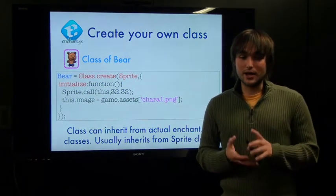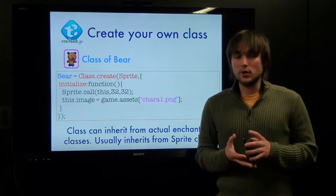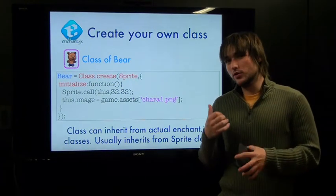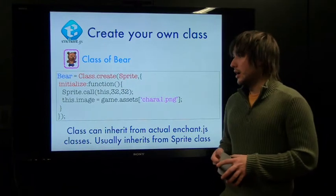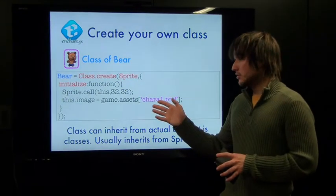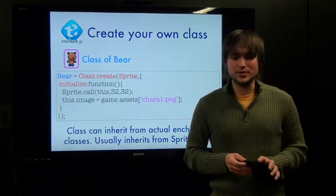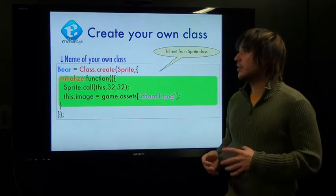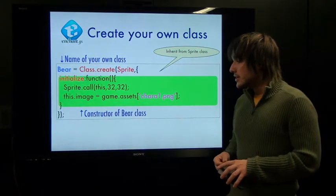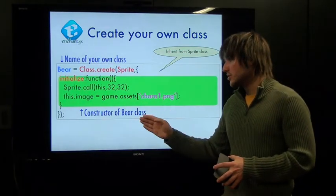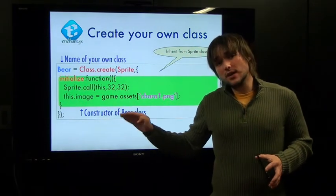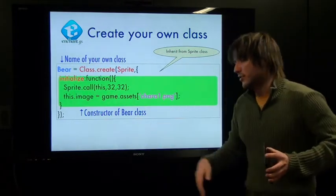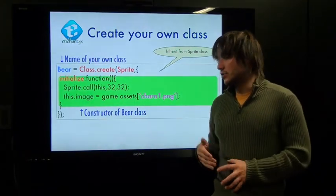Classes can inherit from actual Enchant.js classes. You can also inherit from other classes you've created inside of the game. But normally when you're creating classes, you're going to be creating them as extensions of the sprite class — most of the time. Here we're inheriting from the sprite class. Here's where you put the name of your class. And this is the constructor of the bear class. When we say constructor, that is invoked every time you create a new instance of this class. Any time you say something equals new Bear, all of this code will be executed because it's in the initialize function, or the constructor.